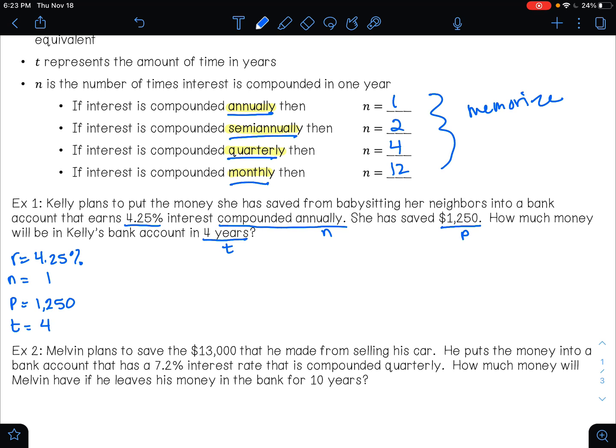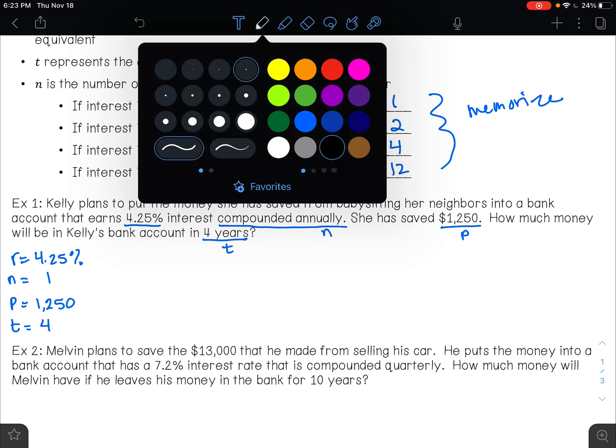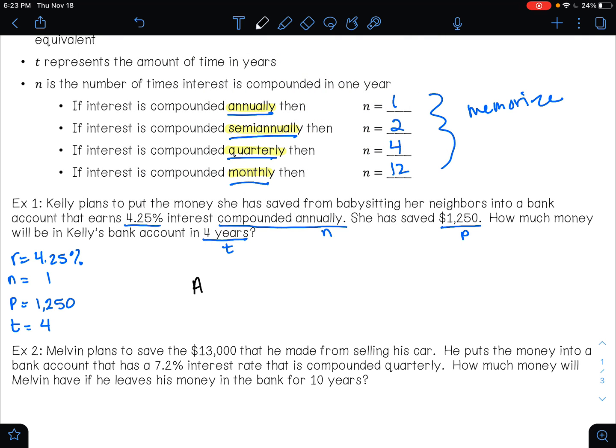And again, that formula is at the top of your page. So we're going to have A equals $1,250 times one plus. Now this part's very important. We cannot plug in a percentage into a formula. So we need to convert this out of a percentage. To do that, you take your percentage amount, 4.25,